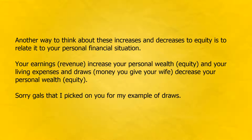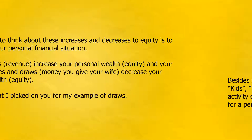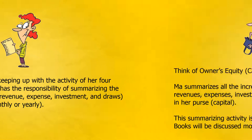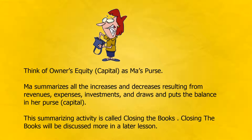Sorry gals for picking on you for that example of draws. Besides monitoring the activity of her four kids, ma capital also has the responsibility of summarizing the activity of her four kids — revenue, expense, investment, and draws — for a period of time, monthly or yearly. Think of owner's equity capital as ma's purse. Ma summarizes all the increases and decreases resulting from revenues, expenses, investments, and draws and puts the balance in her purse — capital. This summarizing activity is called closing the books, which will be discussed more in a later lesson.